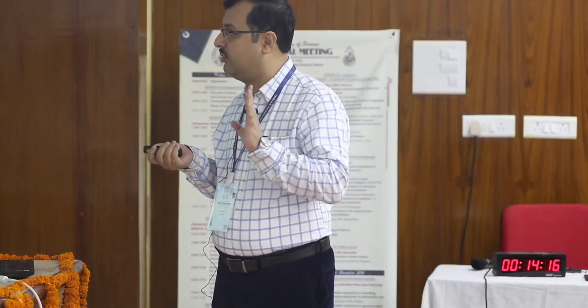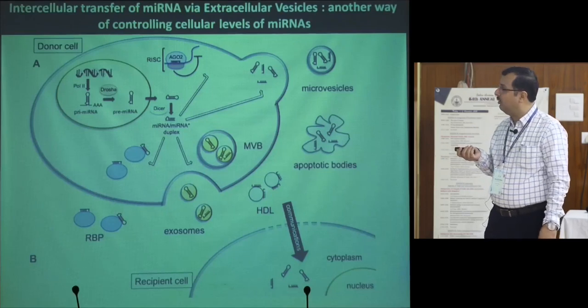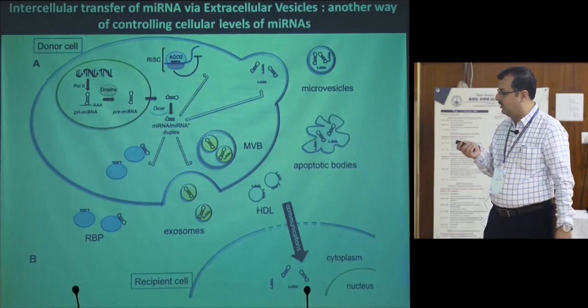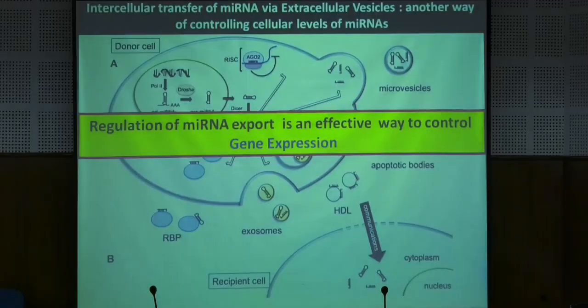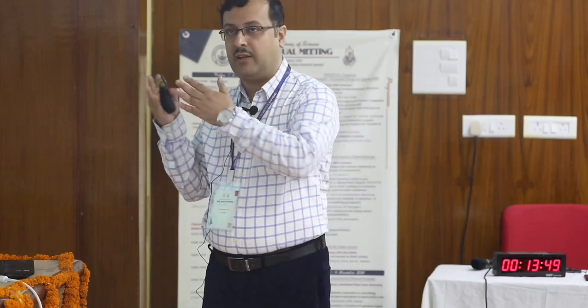MicroRNA can be released from the original cell into the intercellular space and taken up by other cells where it becomes active. This is very interesting research about studying extracellular vesicles and their importance in carrying messages between cells. The regulation of microRNA export could be an effective way to control gene expression, and we have heavily studied how exosomal export of microRNA occurs, how microRNA is specifically targeted to this compartment, and how it is exported into extracellular space and taken to other cells.